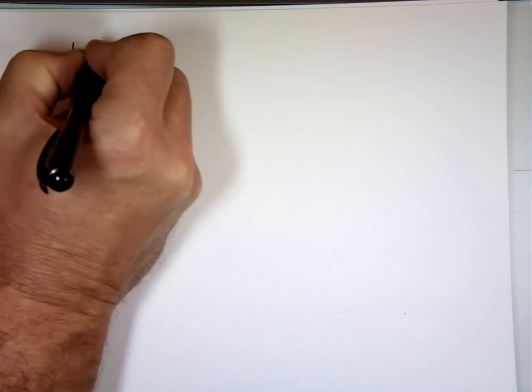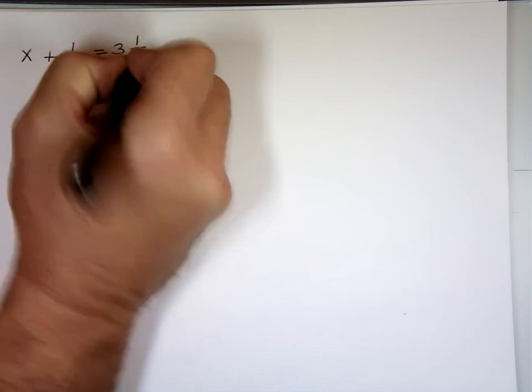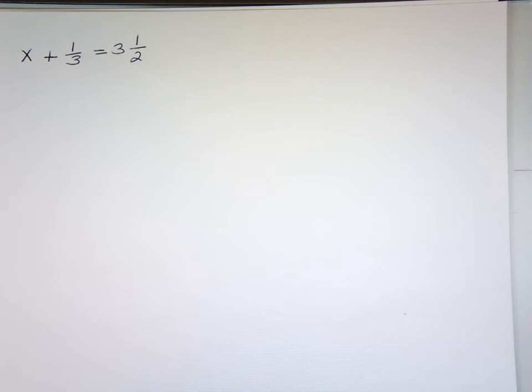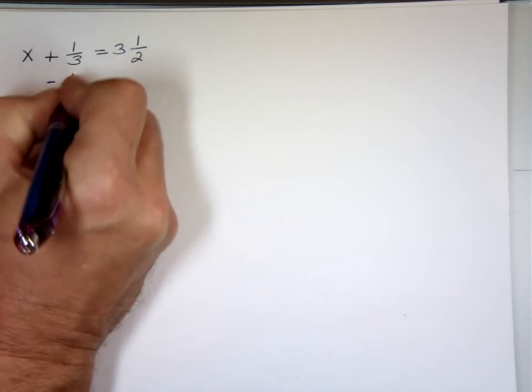X plus one-third equals three and one-half. Now, taking you back to Chapter 2. We have an addition. What's the opposite to addition? Subtraction. Let's subtract one-third from both sides.